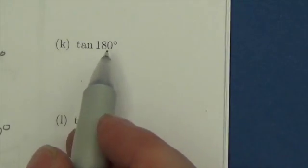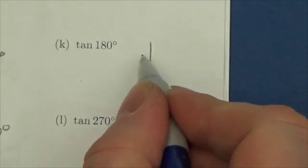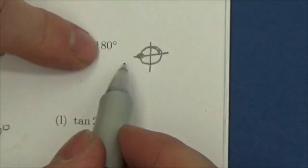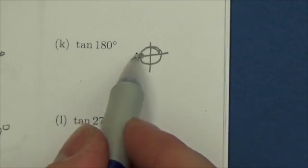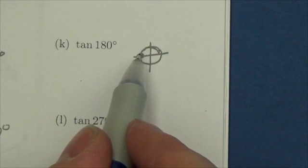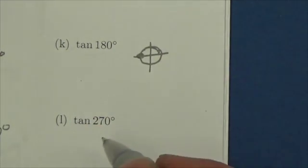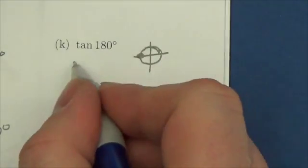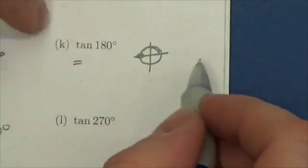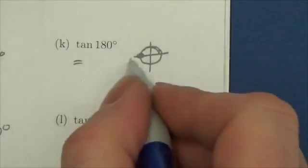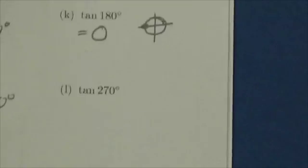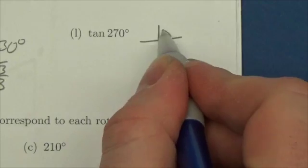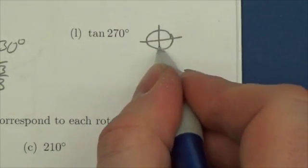Tangent of 180 degrees: 180 is also a quadrantal angle, placing us on the x-axis. Tangent equals the y-coordinate over the x-coordinate. At 180 degrees the y-coordinate is zero, so zero divided by x equals zero. Tangent of 180 equals 0.